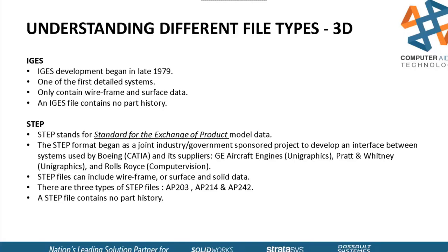This was a joint venture between industry and government. Boeing used CATIA; their suppliers GE Aircraft Engines and Pratt & Whitney used Unigraphics; and Rolls-Royce used Computer Vision. They all needed to talk to each other, so that's when STEP files were created. They're wireframe, surface, or solid data. There are three kinds of STEP files: AP-203 files are standard with no color. AP-214 added body, face, and curve colors. The most recent, AP-242, includes colors plus manufacturing data called PMI.